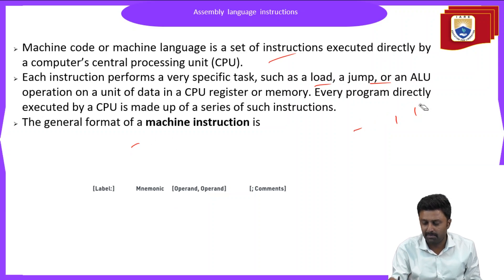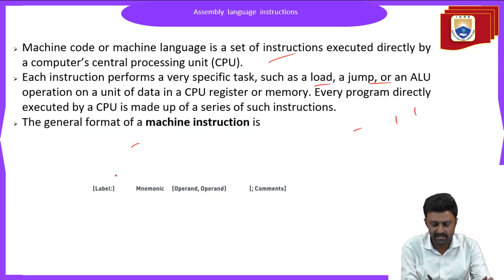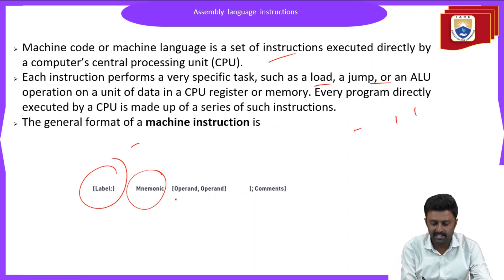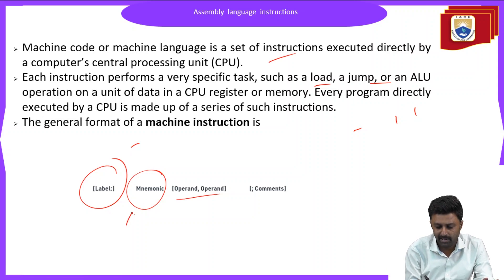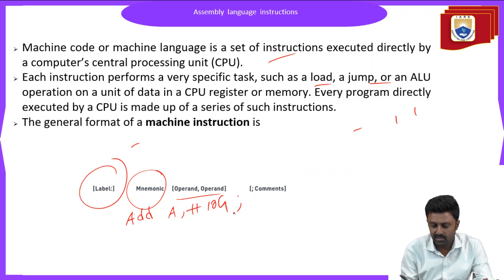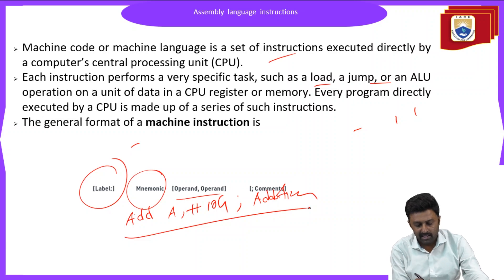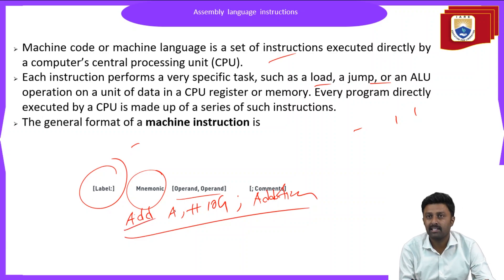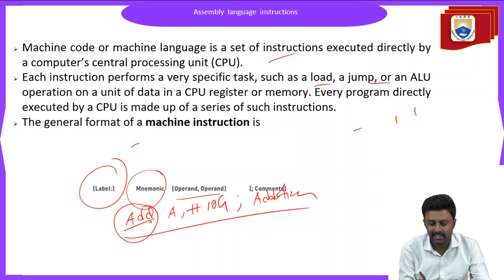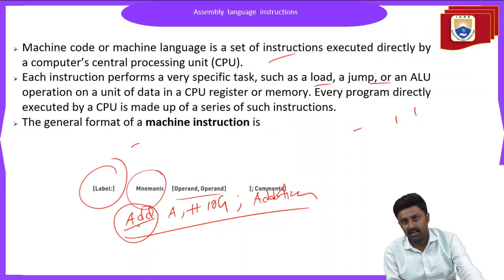The instruction format consists of three parts: the label for naming, the mnemonic (opcode) indicating what operation is being done, and then the operands. For example, if we write 'ADD A, 10H', here 'ADD' is the mnemonic indicating it is going to perform the addition operation. The 'A' and '10H' are the operands. This instruction will add the content of A and 10H and store the result in A.